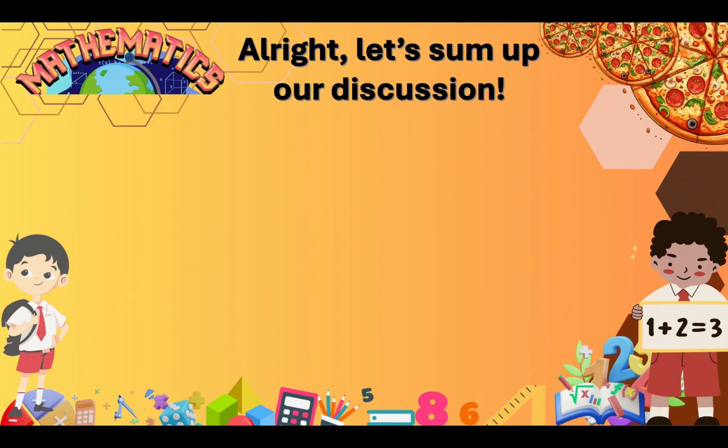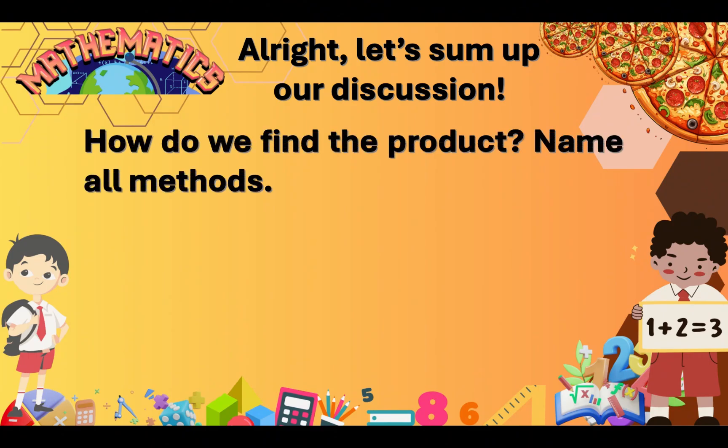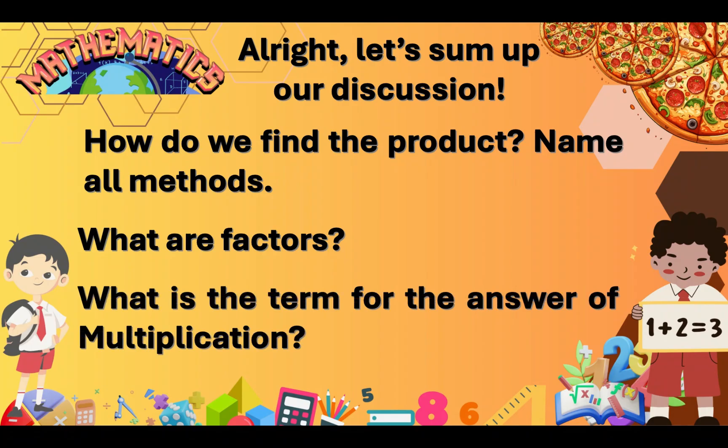Let's sum up our discussion. How do we find the product? Name all methods. What are the factors? Or what are factors? What is the term for the answer of multiplication?